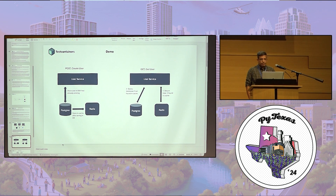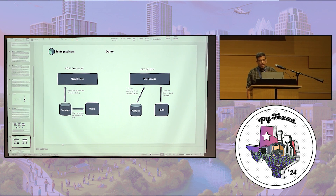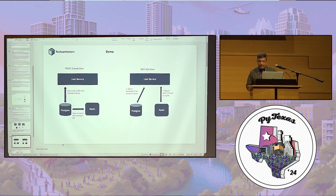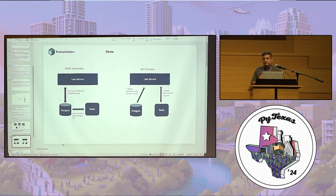For today's demo, I've created a simple API using FastAPI — a RESTful service with three operations: POST, GET, and DELETE — which I'm calling a user service. When we create a user, the user is created in the database and simultaneously stored in the Redis cache. When we GET the user, it first checks the Redis cache; if it exists, it returns the user, otherwise it goes to the database. The intent is to showcase how we can use multiple test containers within one application.